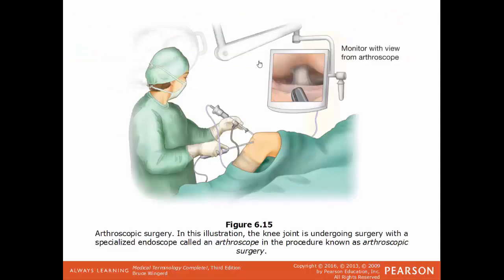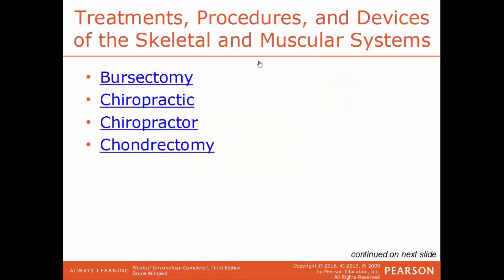An arthroscopic surgery example shows a knee joint being examined or repaired — the overall procedure is arthroscopy and the tool is the arthroscope. Bursectomy is the surgical removal of a bursa. Chiropractic is a medical specialty using the hands to manipulate muscles and spine; the practitioner is a chiropractor. Chondrectomy is the surgical removal of cartilage — chondro means cartilage, ectomy means surgical removal. Chondroplasty is the surgical repair of cartilage.